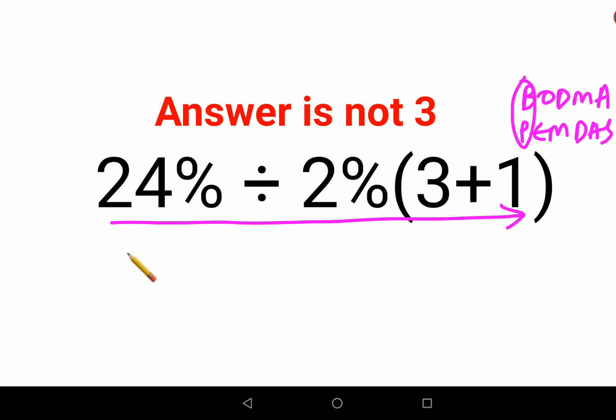So we keep the rest of the question as it is. 24% divided by 2% into, because there is no sign between them, so we will multiply it. And first we will figure out this bracket which is 3 plus 1 which is 4.